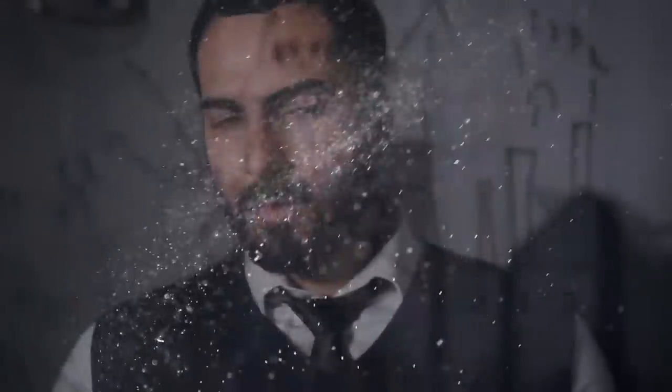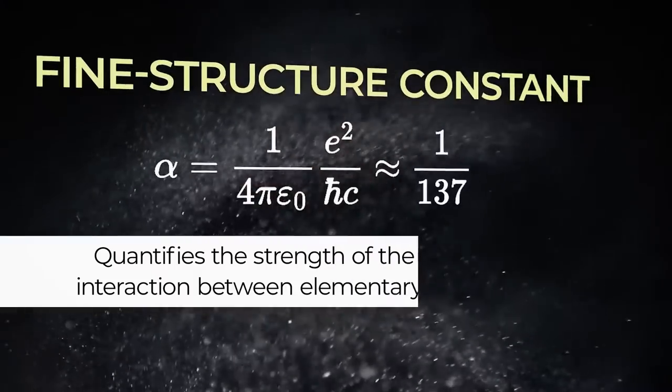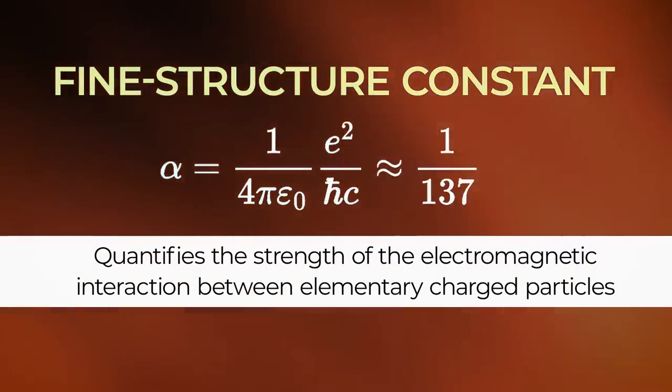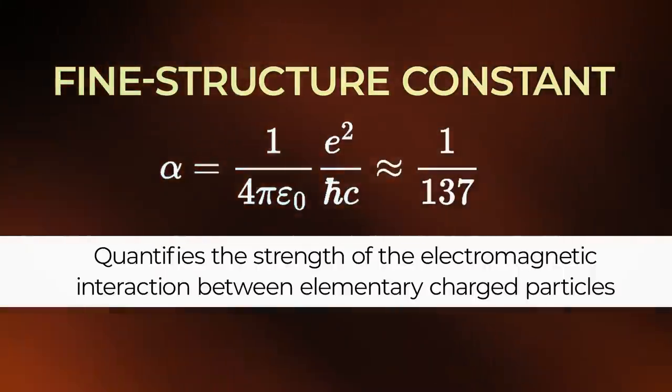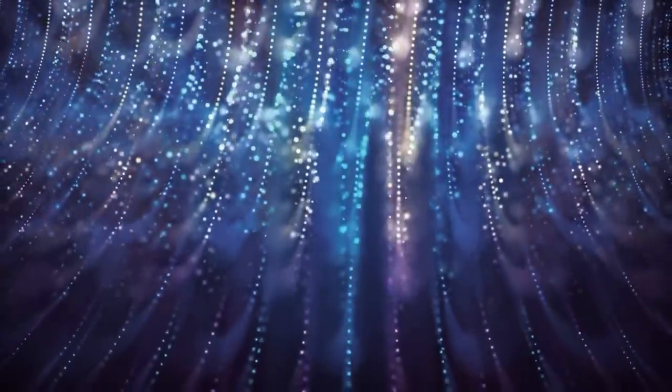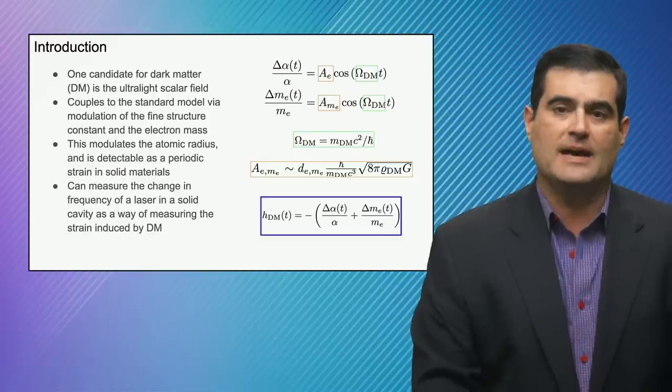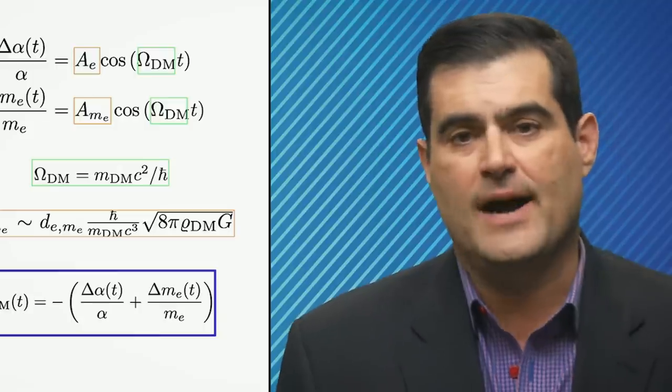These types of scalar fields change what's called the fine structure constant, which is the governing parameter that controls the size and the force of interactions between electricity, magnetism, and what are called photons. The strength of electromagnetism in quantum mechanics is governed by the fine structure constant.